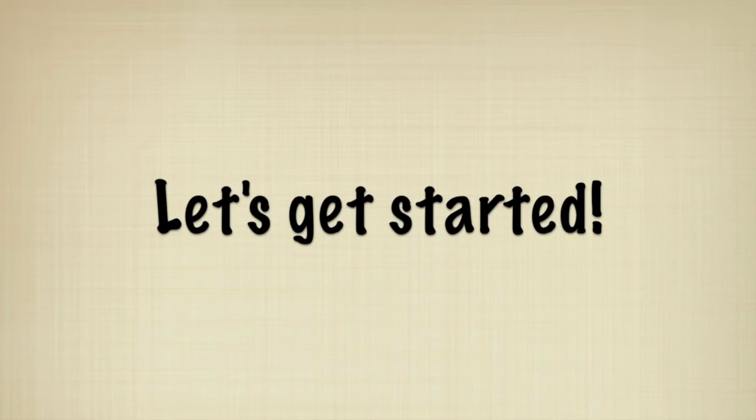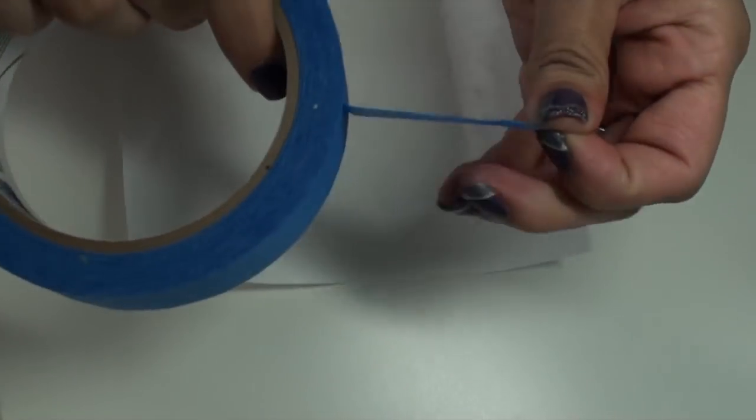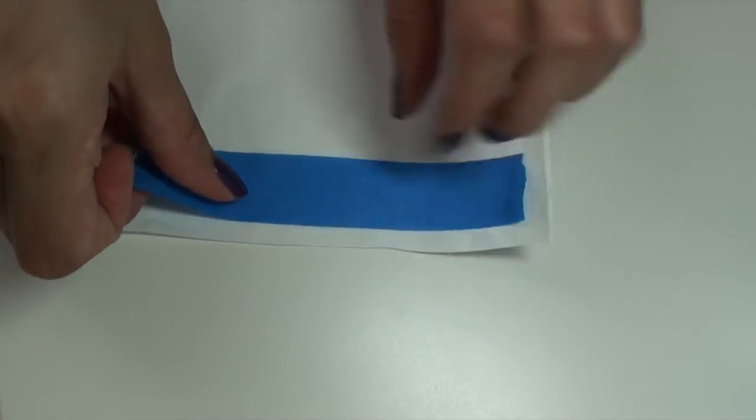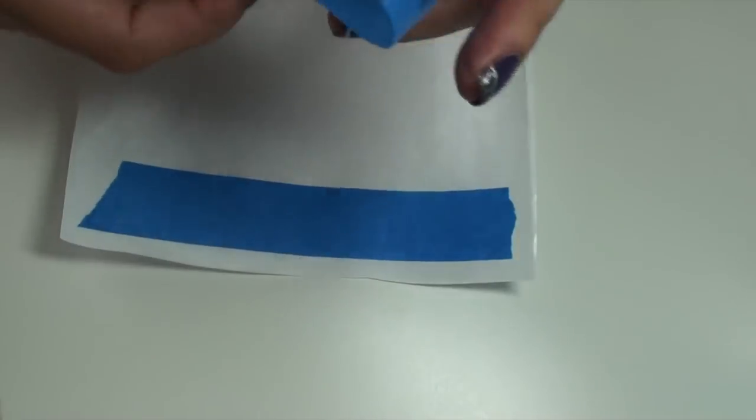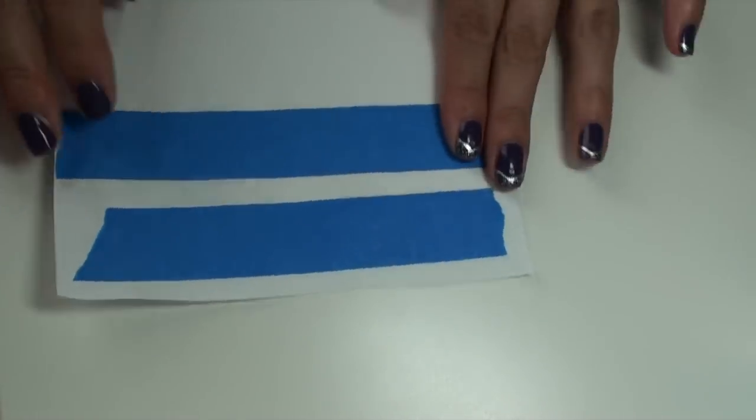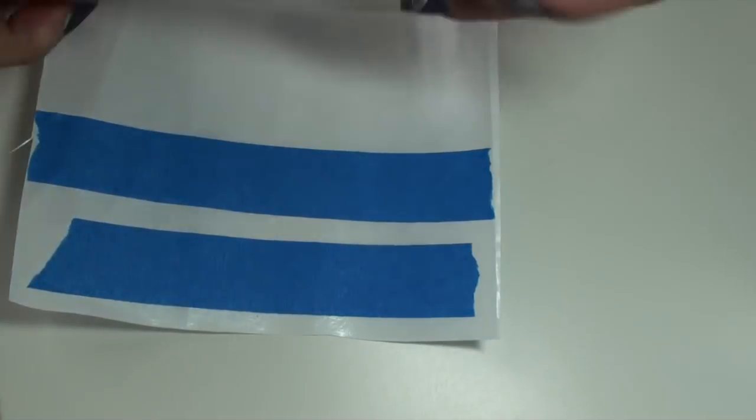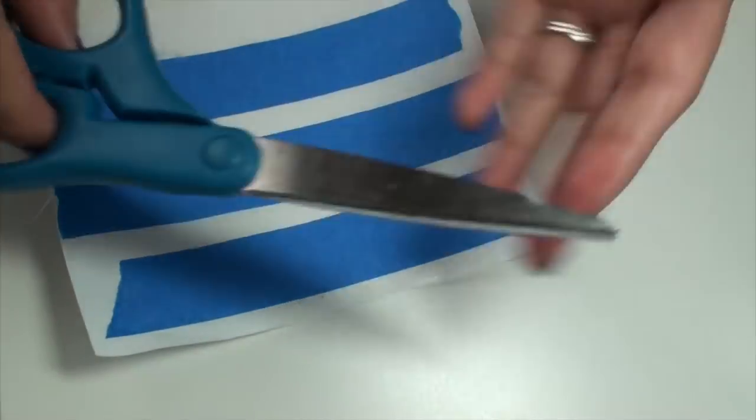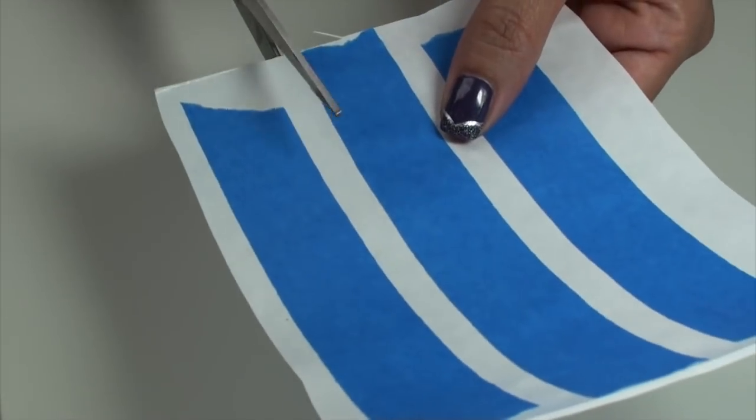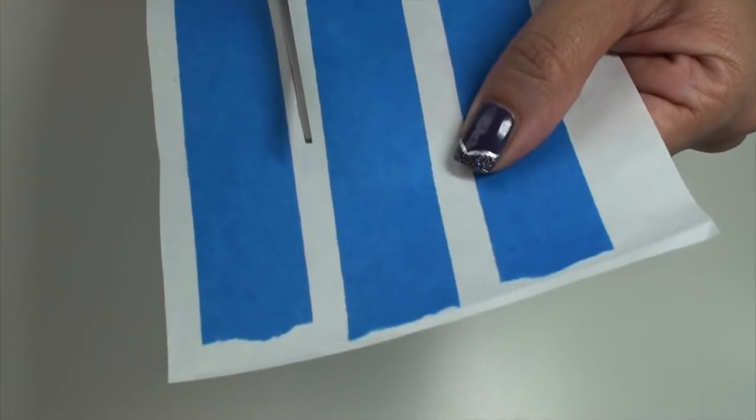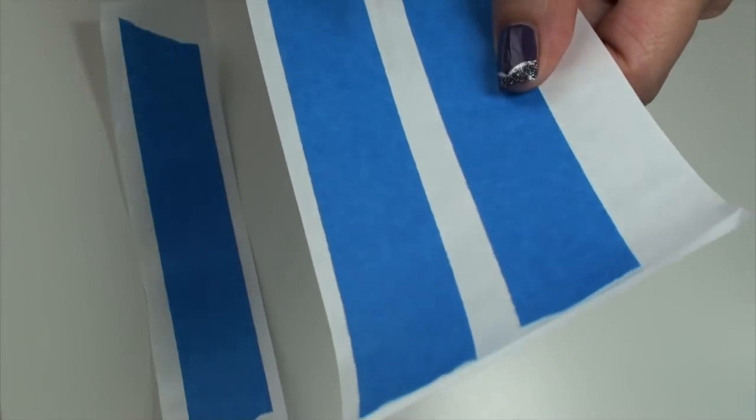So let's get started. The first thing I did was take a small piece of freezer paper and lay out three strips of the painter's tape across it, making sure to space them out a little bit. Then I took my scissors and I cut each piece of painter's tape out, leaving a small margin around.